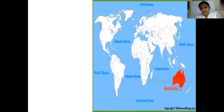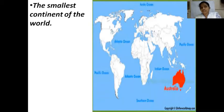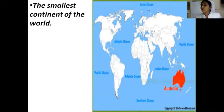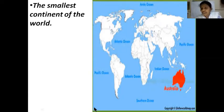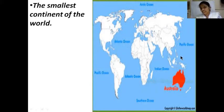Lastly, we learn about the smallest continent — that is Australia. Australia has some unique features. Australia is the only continent that has one single country. All other continents have many countries, but Australia has only one. And this is the only continent that is an island. All other continents are not islands, and even Antarctica is not an island. But Australia is an island because it is surrounded by water on all four sides.